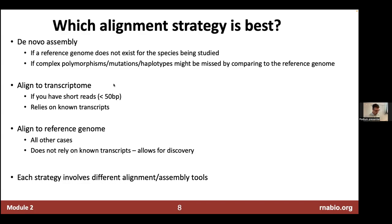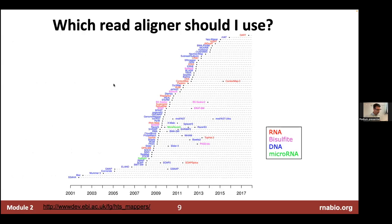There are multiple splice-aware aligners that allow you to align directly to the reference genome — dozens of them. This slide shows a history of various aligners, and HISAT, which we're going to use, is on there somewhere.